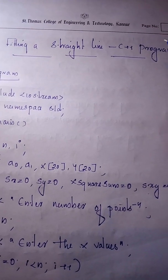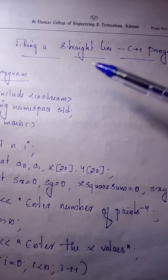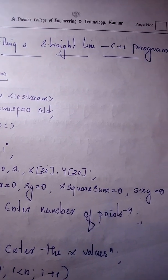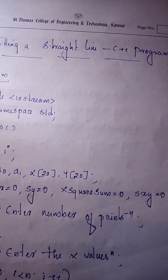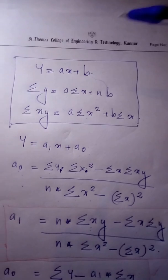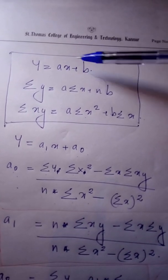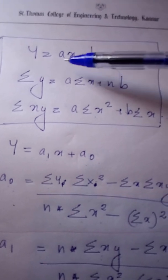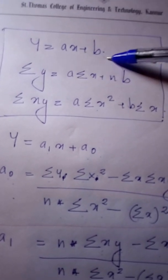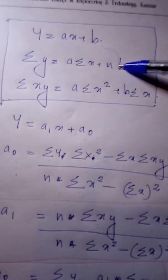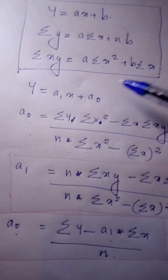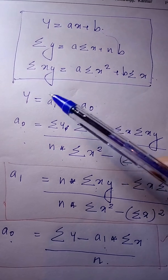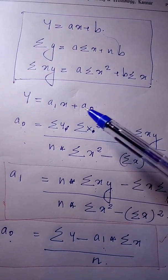Hello students, today we are going to discuss implementation of fitting a straight line using a C++ program. The straight line equation is y equal to ax plus b. We rewrite this equation as y equal to a1x plus a0.